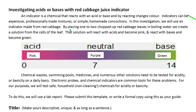In this investigation we will use an indicator made from a red cabbage. By placing one or two chopped up red cabbage leaves in boiling water, we create a solution from the cells of the leaf. Boiling the water breaks the cell walls down and pulls out the leaf's chemicals that react with acids or bases. That solution will react with acids and become pink, and react with bases and become green. Here is a scale of what that indicator will look like — starting as a purplish mixture, and if mixed with an acid it becomes more pinkish, and with a base it becomes more green. You can see the numbers of the pH scale on the bottom: 0, 7, 14.